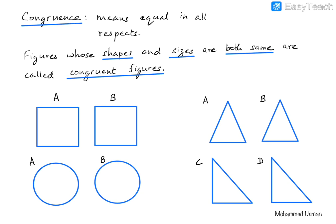Let us now discuss what we mean by congruence and how to determine if two triangles are congruent to each other. Congruence means that a figure is equal in all respects — the figure has the same dimensions and the same shape. Figures of the same shape and size are called congruent figures.